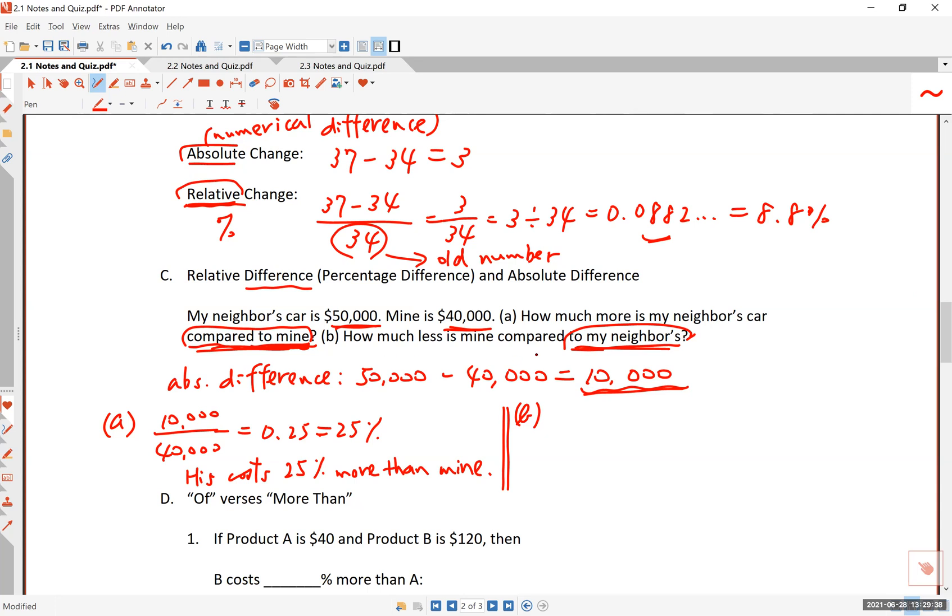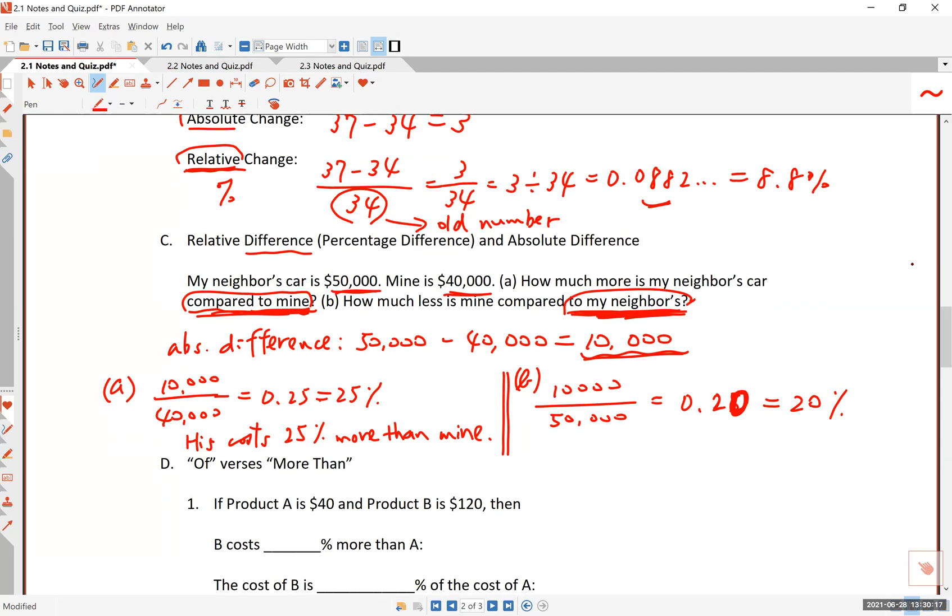Part B. Part B is different. B says how much less is my car compared to my neighbor's, right? Compared to or how much more relative to my neighbor's car. So this gives me the reference number. The reference number in this case is my neighbor's car. So the absolute difference is 10,000. This time, the base is going to be 50,000, my neighbor's car price. And the answer turns out to be 0.2 or 0.20. And that is 20%. You have to make sure you have to know, you have to know how to go from the decimal to a percentage and vice versa.